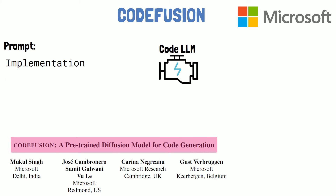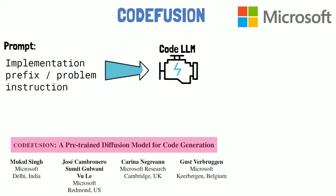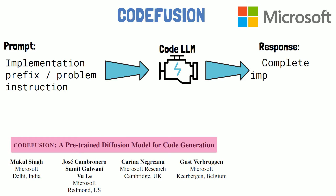With a code LLM, the model is able to get a prompt, which can be a beginning of an implementation such as a method name, or in some models an instruction that explains the problem to solve. In response, the code LLM will generate the complete implementation.